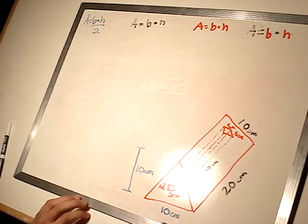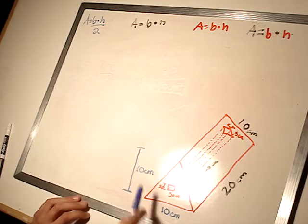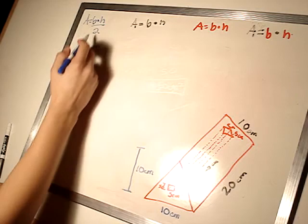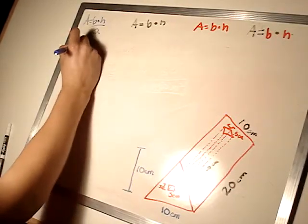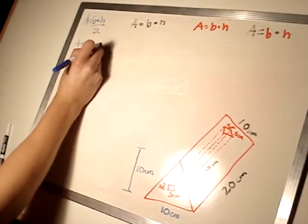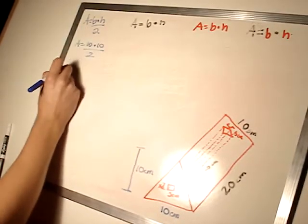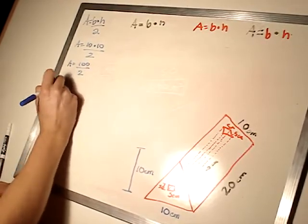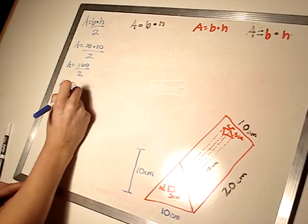So, to start off, we're going to start with the blue. So 10 centimeters and 10 centimeters. Area equals base times height divided by 2, because that's for this triangle. So, area equals base, 10, times height, 10, divided by 2. Area equals 100, divided by 2. Area equals 50 centimeters squared.